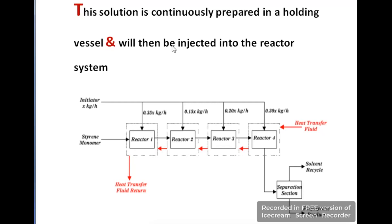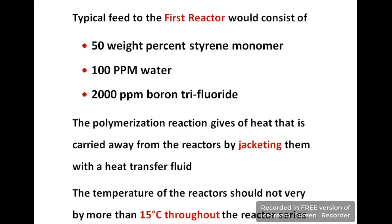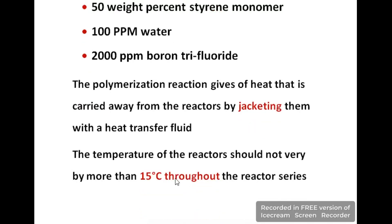This initiator solution is prepared continuously in a holding vessel and also injected into the reactor system. In the first reactor we feed a mixture of three raw materials: 50 weight percent styrene monomer, 100 ppm water, and 2000 ppm boron trifluoride. After the reaction, heat is generated, and to remove this heat we use a cooling jacket in which a cooling medium flows from one side to the other to absorb the heat of reaction. The temperature of the reactor is maintained at 15°C throughout the series of reactors.